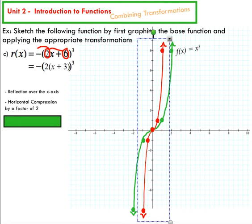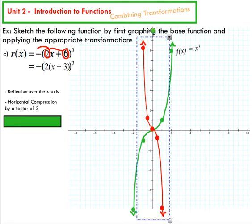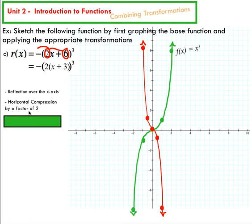So this value was at 8 originally. Once I've performed that reflection, you can see that it's at negative 8 down here. That's my reflection over the x-axis. So I've taken care of my first two transformations.